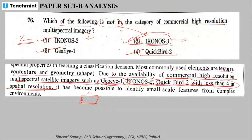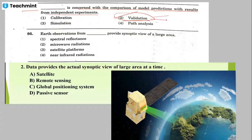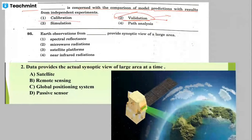Question 94: blank is concerned with the comparison of model prediction with results from independent experiments — the answer is validation. Validation checks how accurately a model predicts results. Calibration, in contrast, uses historical data and current situations to make judgments about model performance.